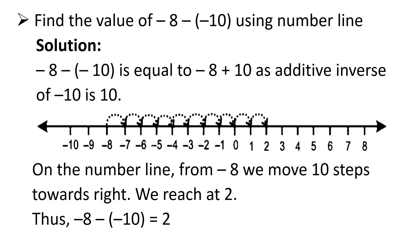Find the value of minus 8 minus minus 10 using a number line. Minus 8 minus minus 10 is equal to minus 8 plus 10, as the additive inverse of minus 10 is 10. You are going to draw a number line. On the number line from minus 8, we move 10 steps towards the right. We reach at 2 as shown in the figure. Thus, minus 8 minus of minus 10 is equal to 2.